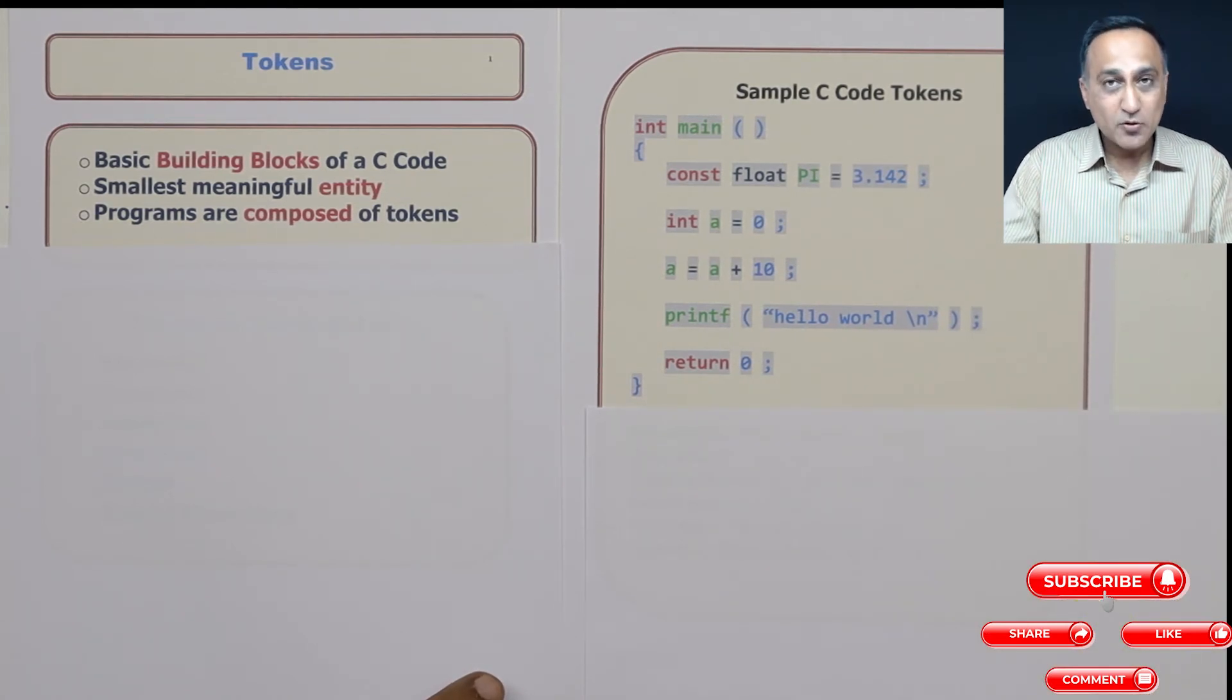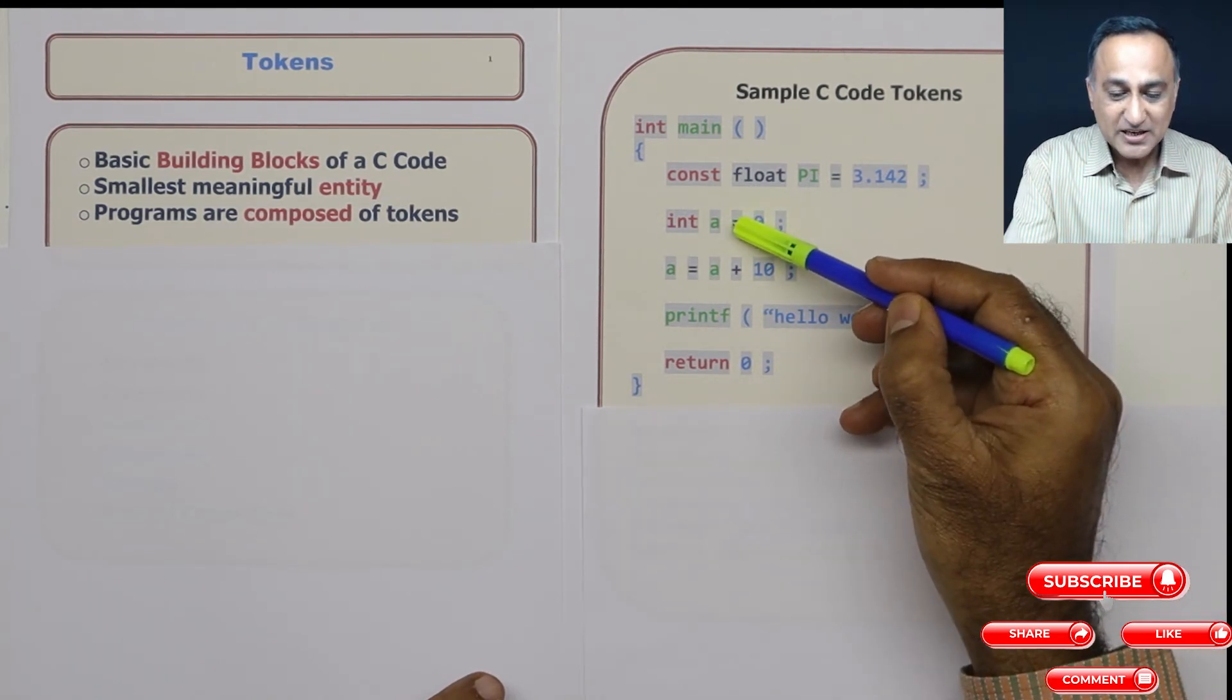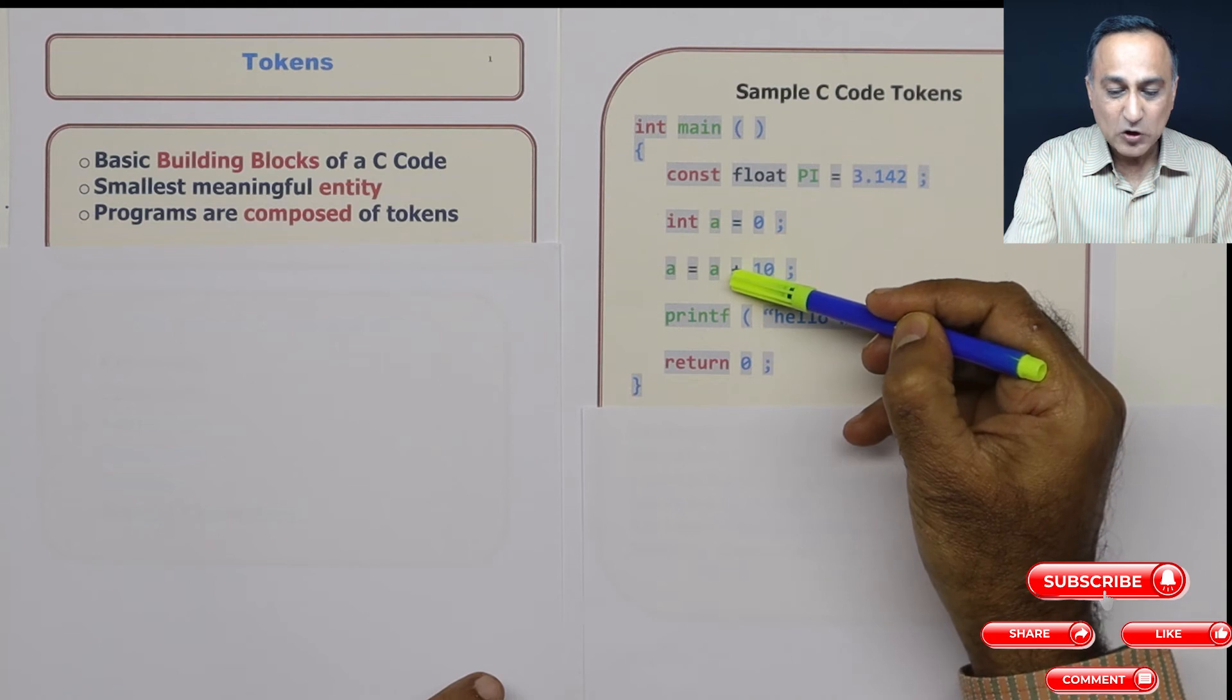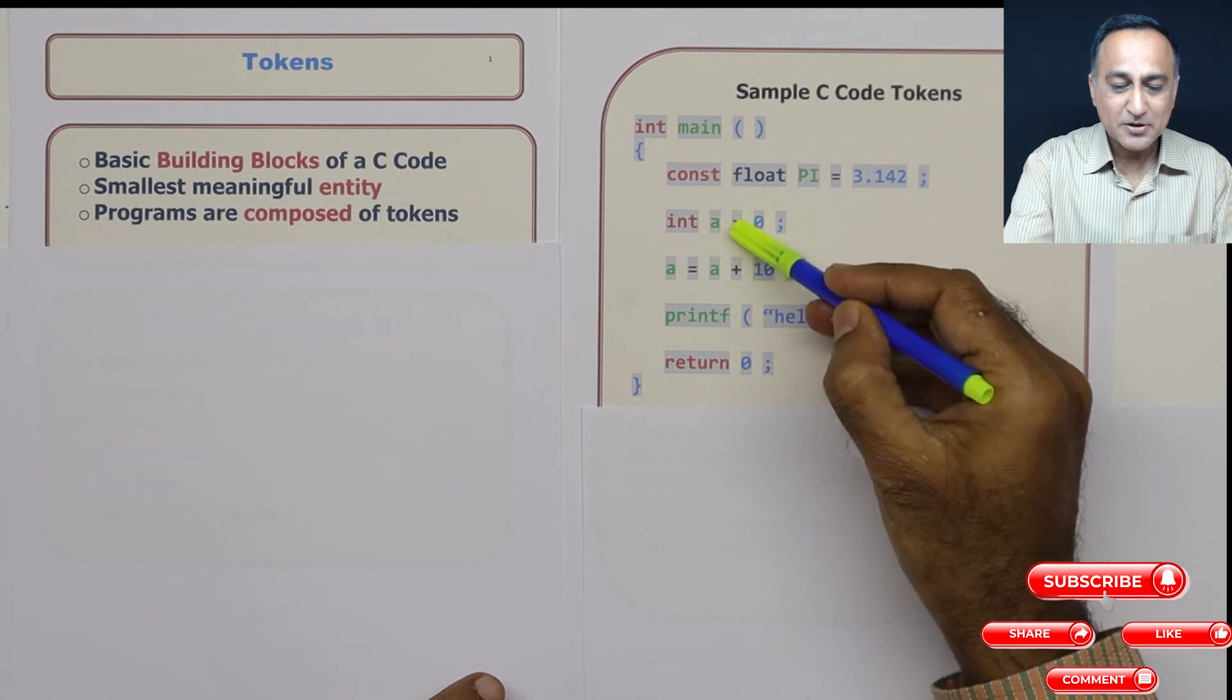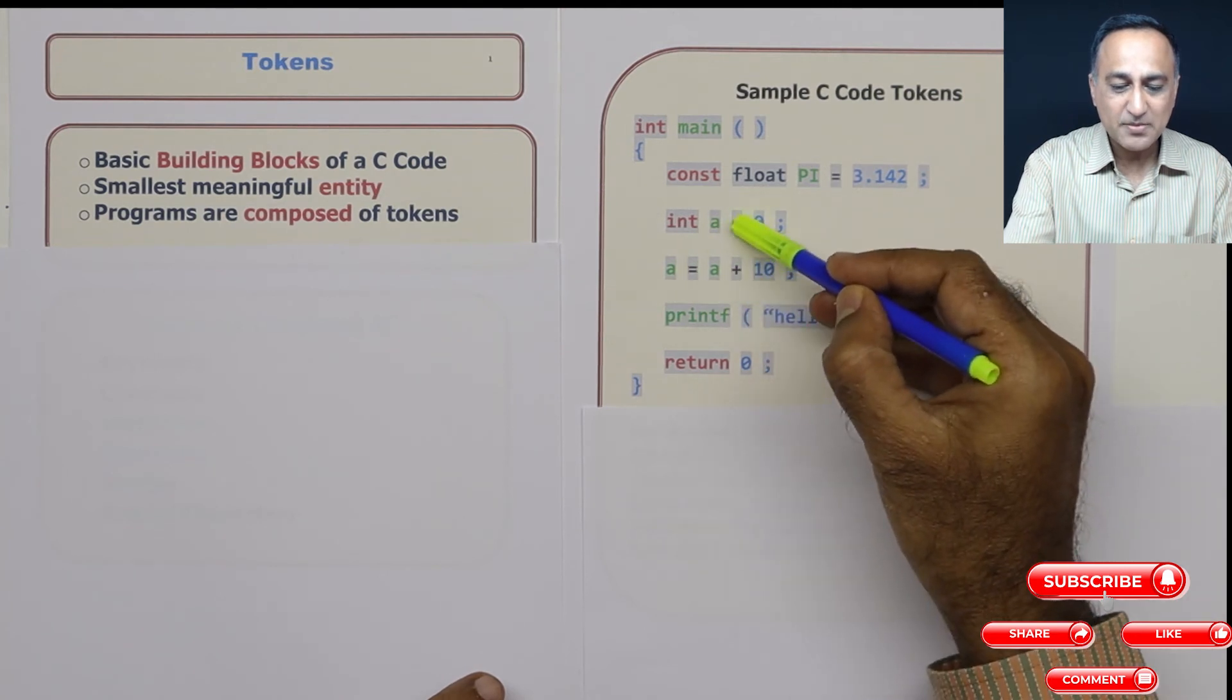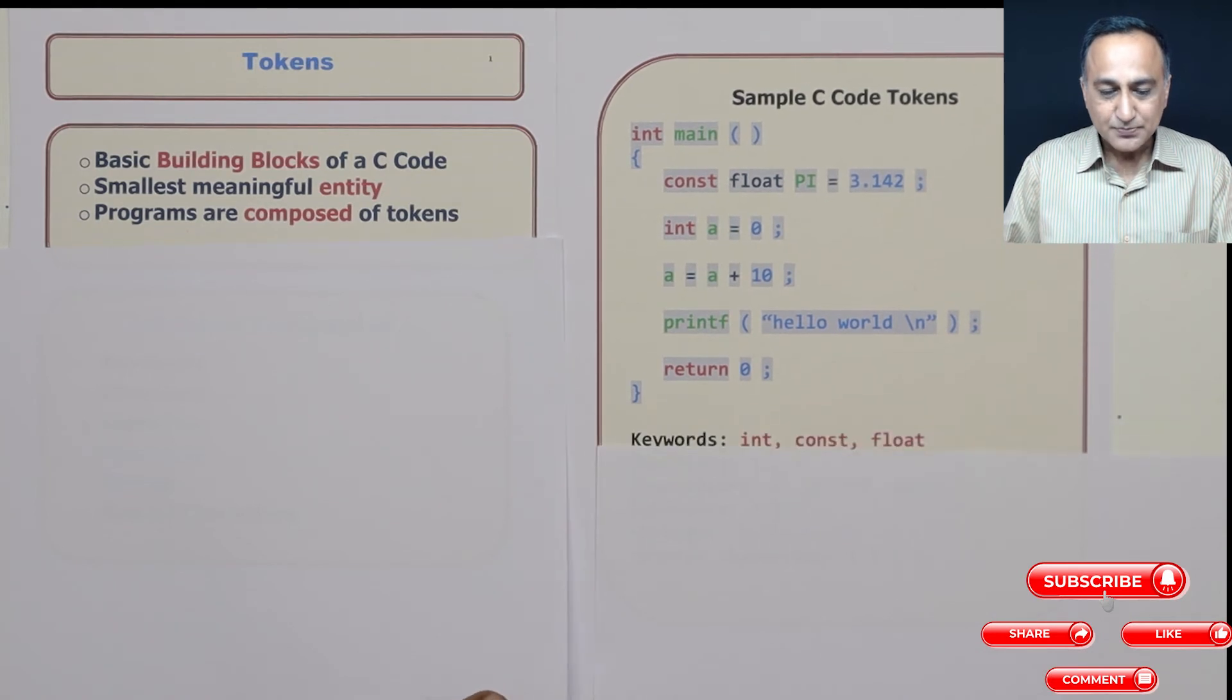There's one more kind of token: operators. Assignment is an operator, plus is an operator. Operators are all mathematical operators like left shift, right shift, unary operators. These are all examples of operators - assignment, plus - this is an example of operator.